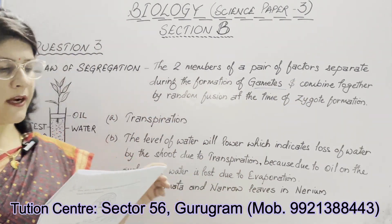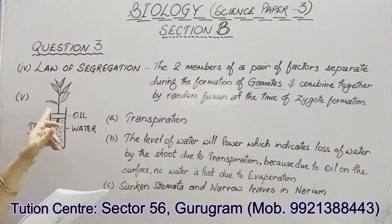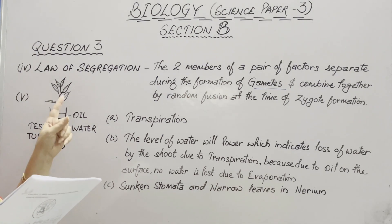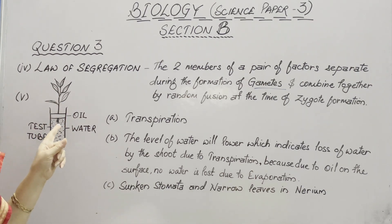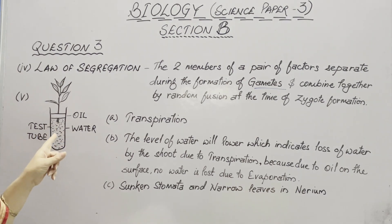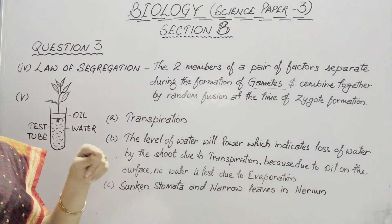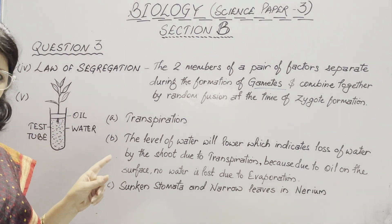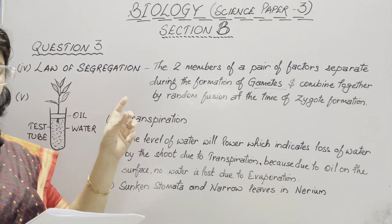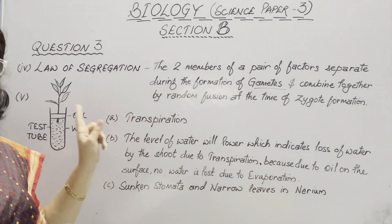In the fifth part, a diagram is given. You can see oil on the surface of water in the test tube, and then a shoot is immersed in this water. Carefully observe that there are no roots shown in the diagram. If roots are shown, then this process would be absorption of water by roots. But here, no roots are shown — only the shoot is given. So this is the process of transpiration.